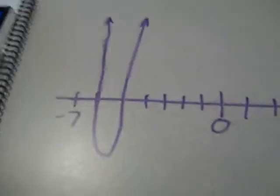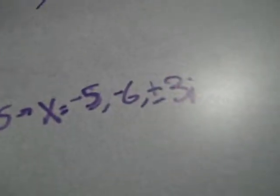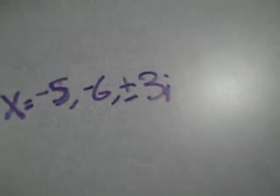And then this is it, graphs, because the answers and the zeros are negative 5, negative 6, and plus or minus 3i.